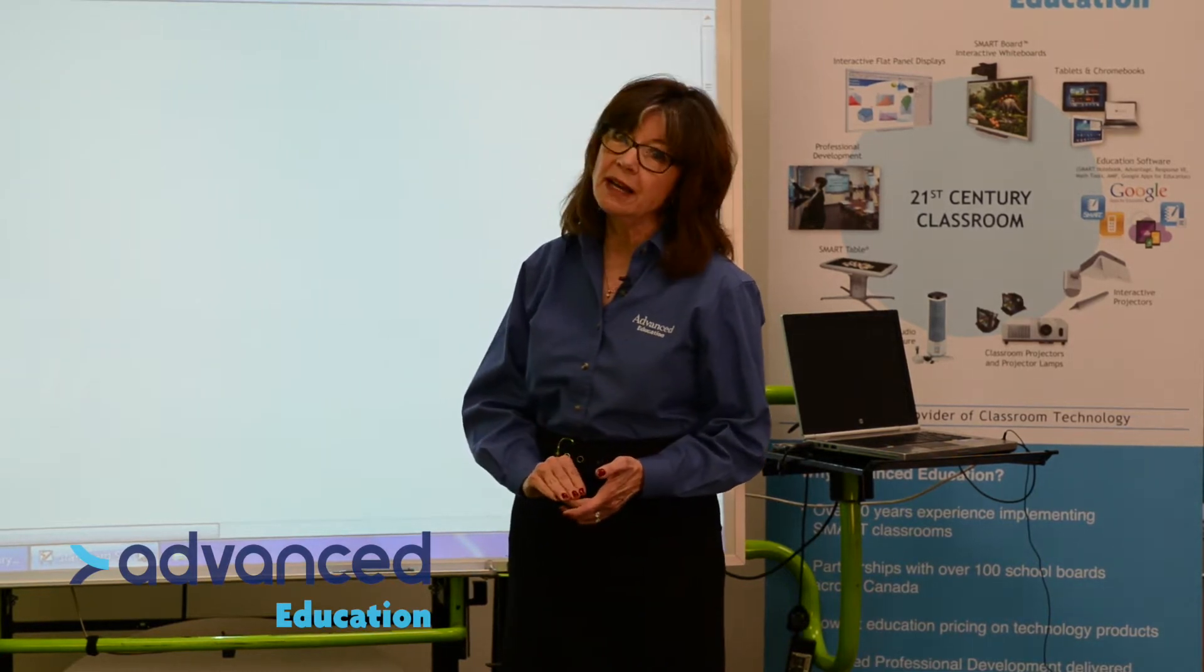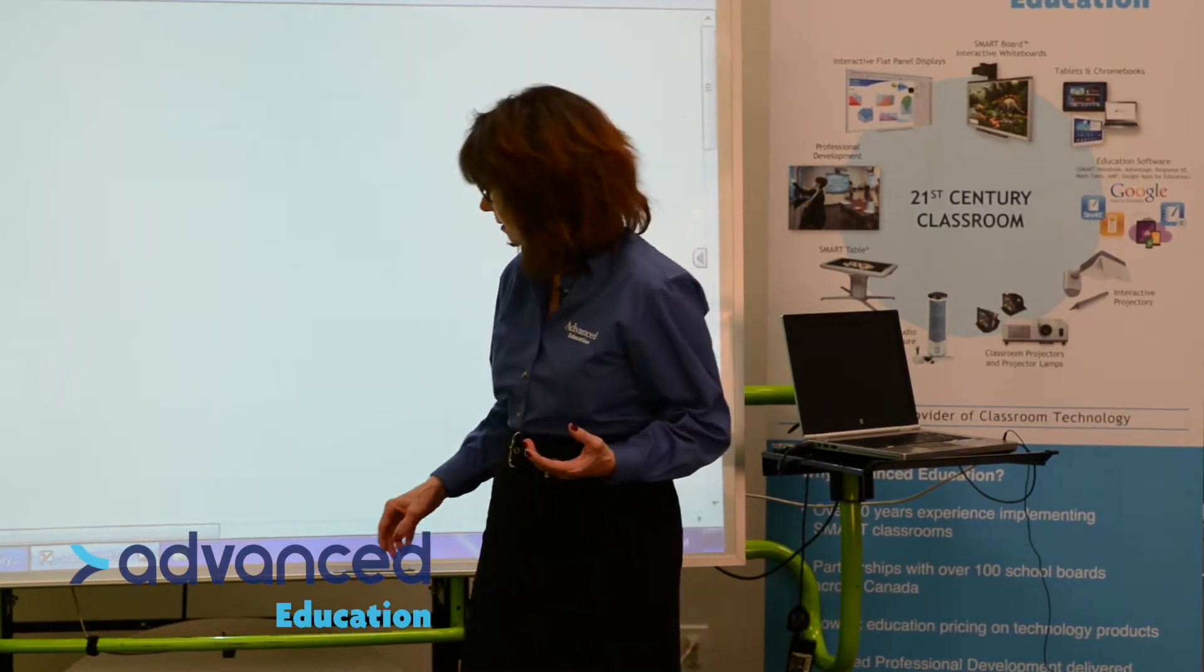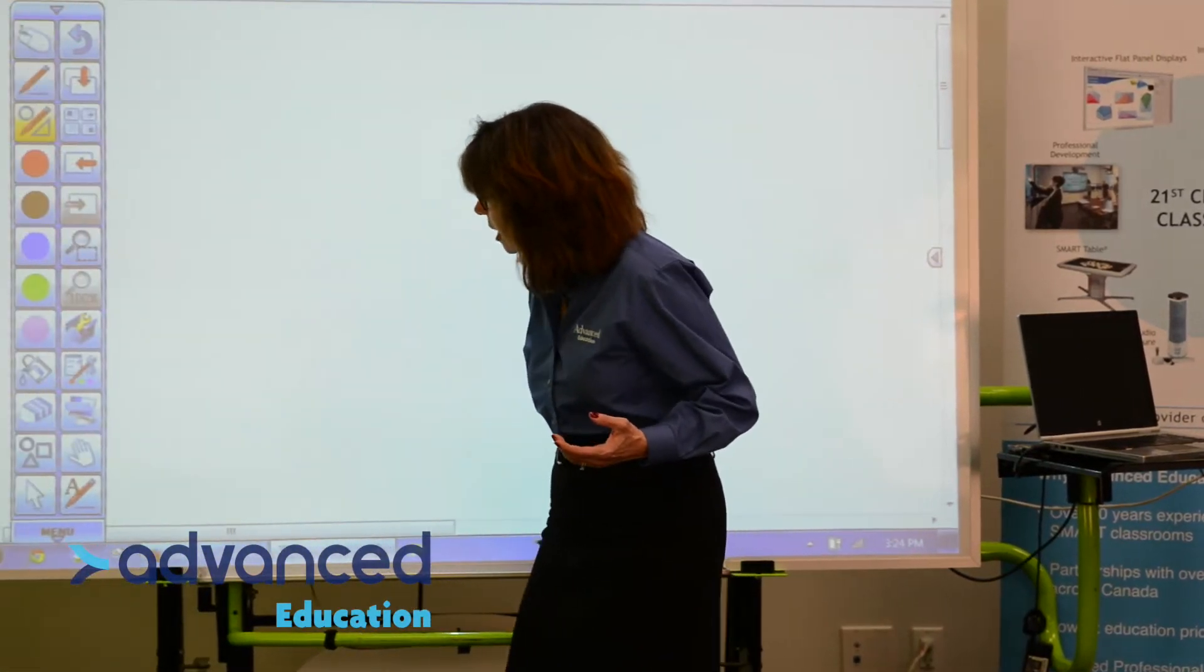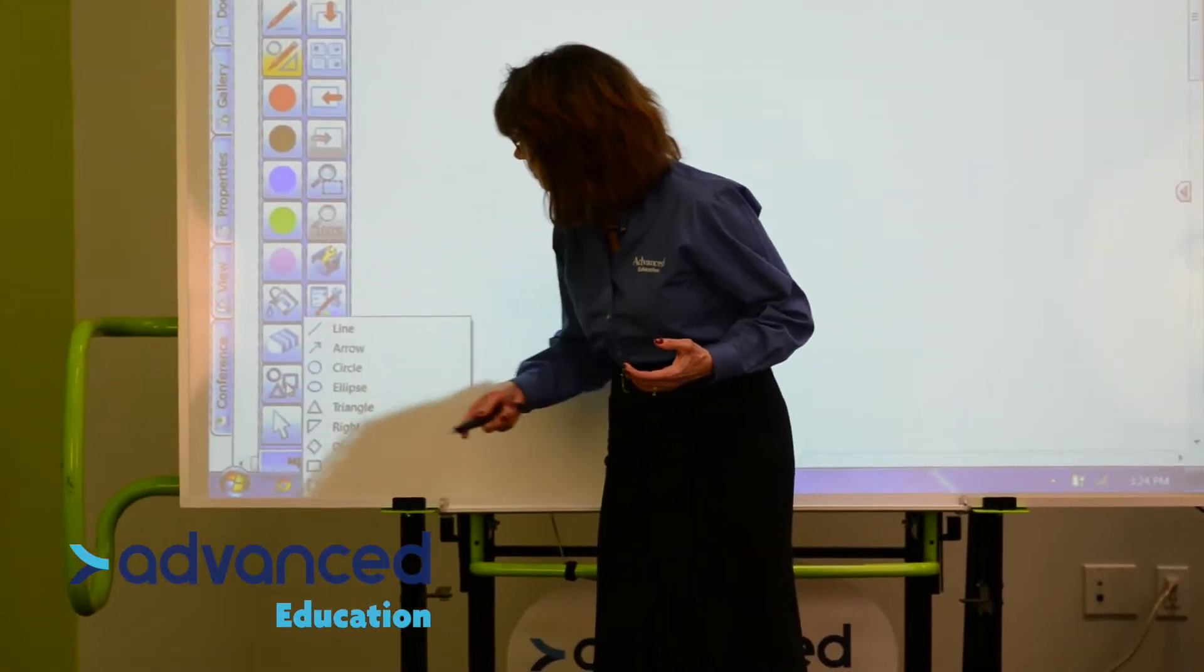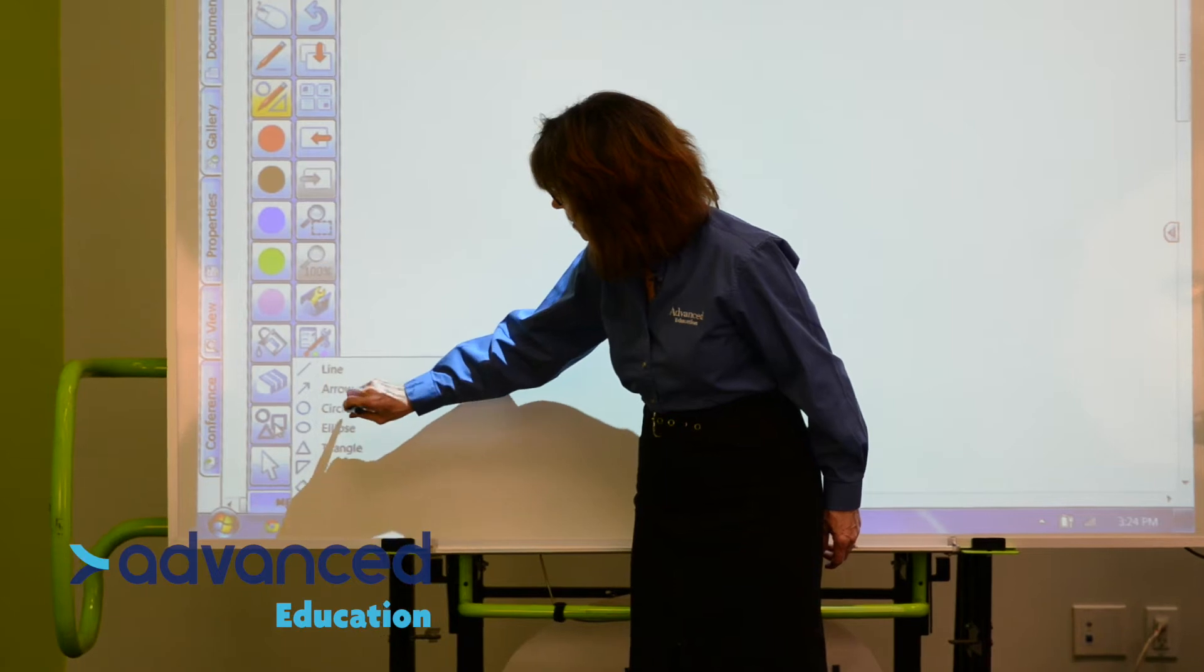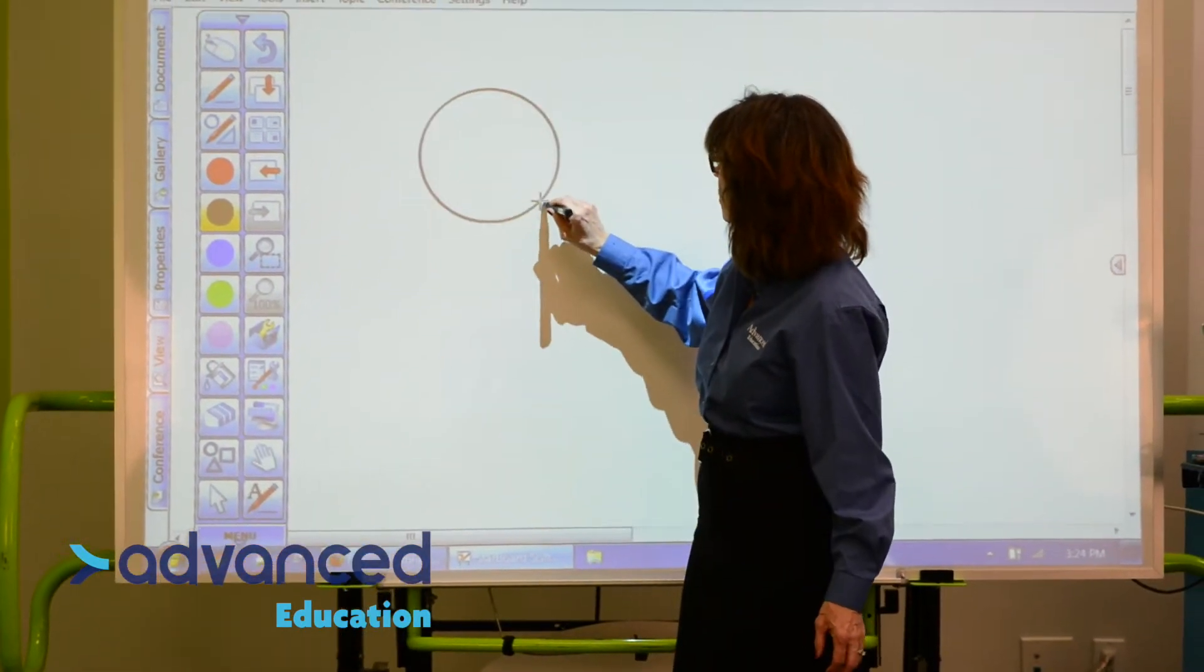For the first one we're going to make, I'll do just a plain circle. So I'm going to click on my shapes at the bottom, and the third one down is a circle. I'll just draw a circle on the board.